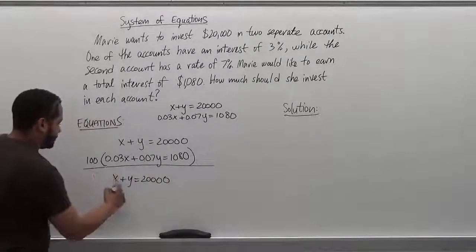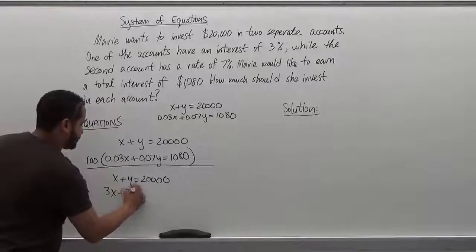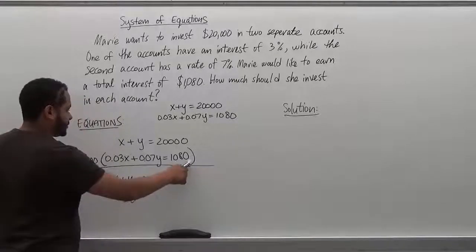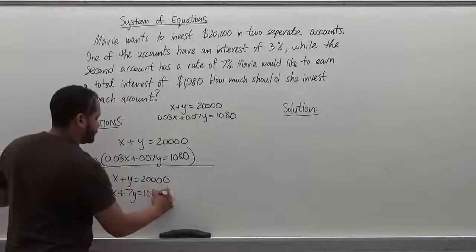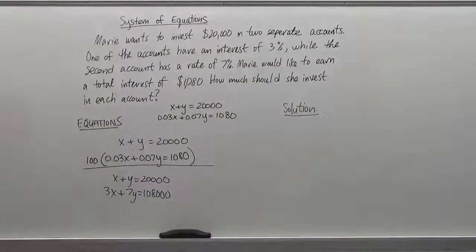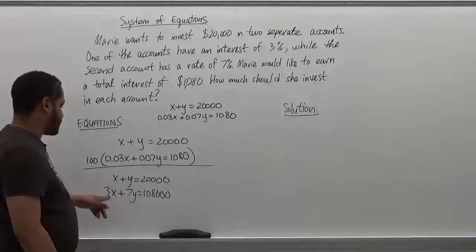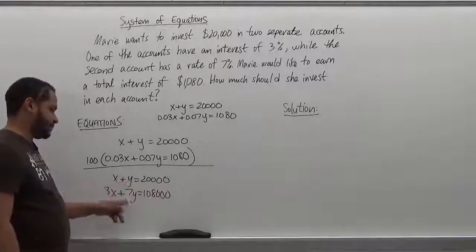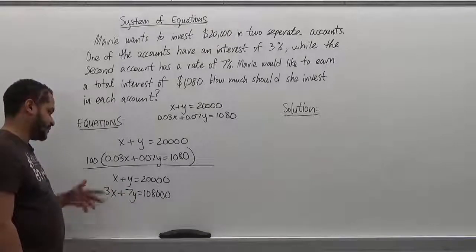At the bottom, we get 3x plus 7y. And we add two zeros to this number. The next step here is to make two of the terms the same but opposite. Just one set. Either the x's or the y's. I'm going to choose the x's personally because I want to make the number as small as possible when I magnify it and make it larger. And three is smaller than seven.